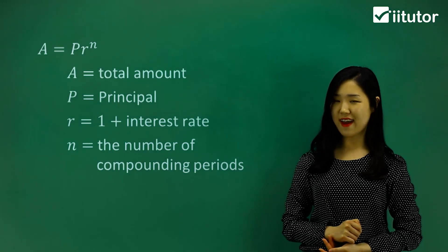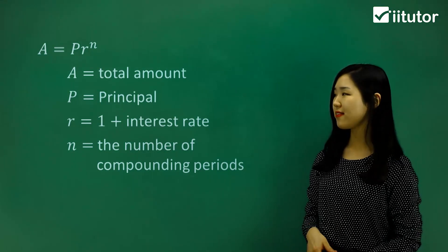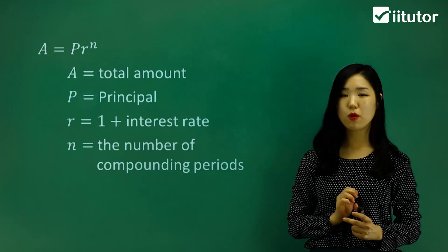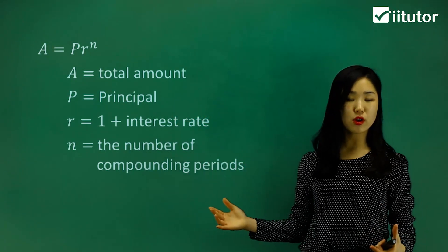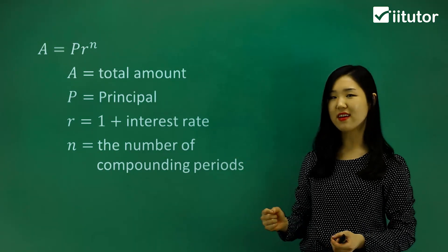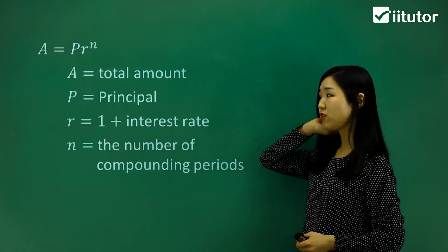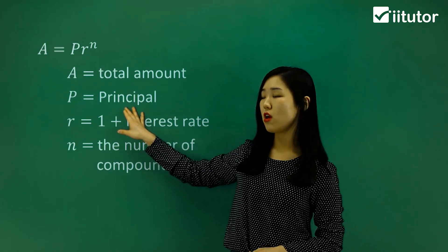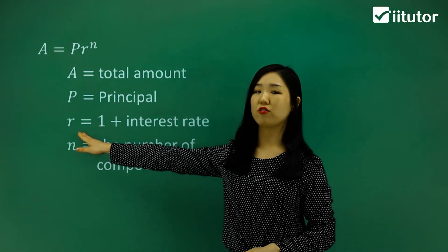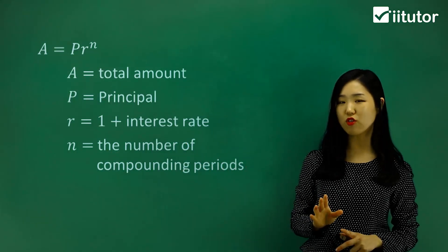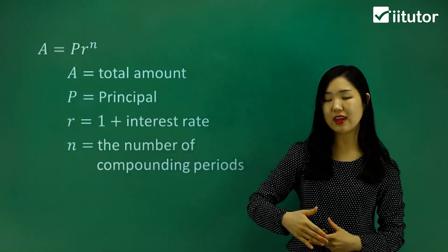Let's have a look at some compound interest. I've got a formula on the board: A equals P times R to the power of n. This is the formula we're going to use when questions involve compound interest. A is simply the total amount — if we invest money it grows, so A will be the value after some period of time. P is the principal amount, whatever you start with. R is going to be one plus the interest rate — not just the interest rate alone — because when we're compounding, it increases over time.